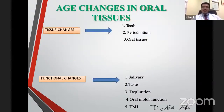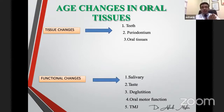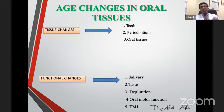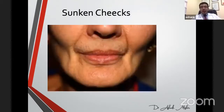The changes seen in the oral cavity as we age can occur in the teeth, in the gums, in saliva, in taste, and also in the temporomandibular joint — the TMJ — which is the joint where your lower jaw is attached to your head. We will look into each of these individually.